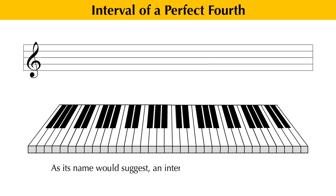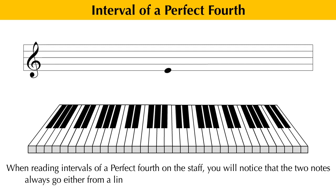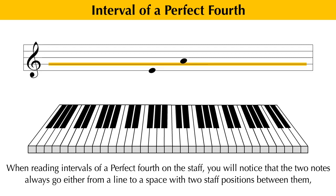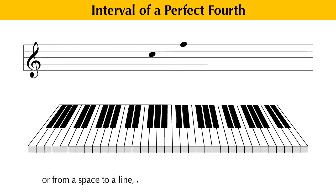As its name would suggest, an interval of a fourth is any interval which spans four positions on the staff. When reading intervals of a perfect fourth on the staff, you will notice that the two notes always go either from a line to a space with two staff positions between them, or from a space to a line also with two staff positions between them.